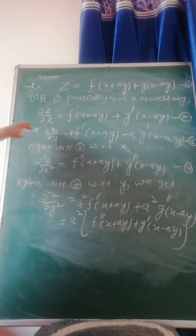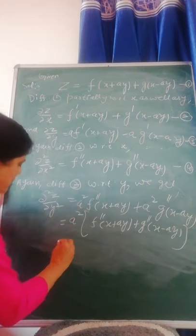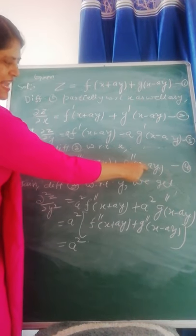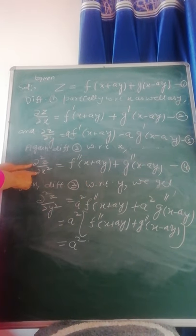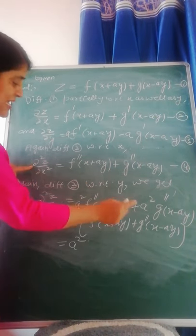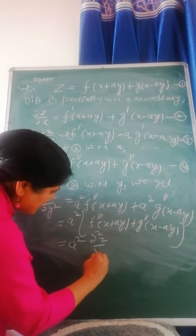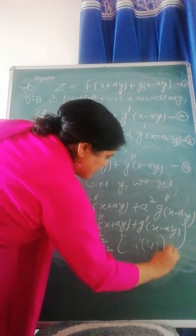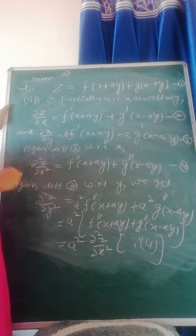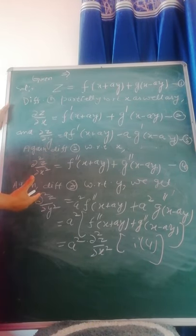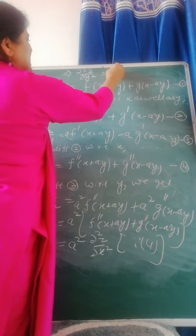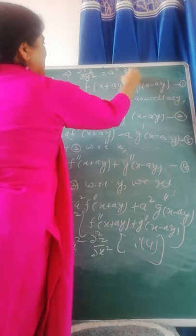Now see, students — this expression f''(x + ay) + g''(x − ay) is exactly equal to ∂²z/∂x² from equation 4. So instead of f''(x + ay) + g''(x − ay), we can write ∂²z/∂x². Therefore, ∂²z/∂y² = a²·∂²z/∂x².